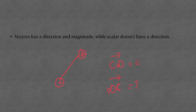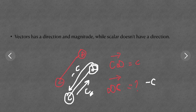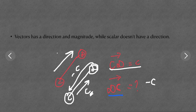Vectors have a direction and a magnitude, while scalars do not have a direction — they only have a magnitude. For example, CD is equal to c, meaning that direction is positive c. But if they ask for DC, which is the opposite direction, DC will be negative c, because from c to d it is positive, and from d to c it will be negative.